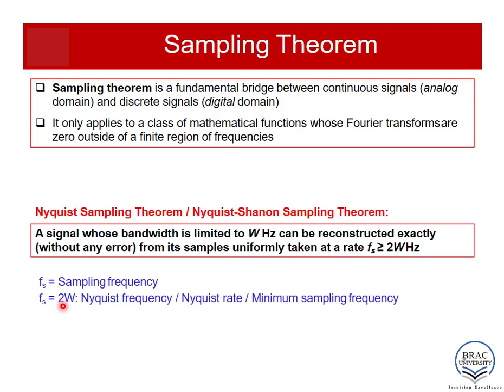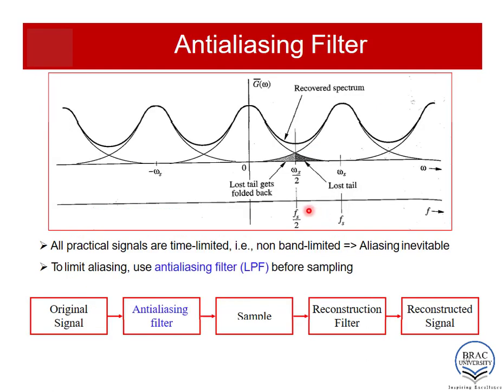So if our sampling frequency is fs and W is our bandwidth, then fs should be at least 2W. This fs of 2W is called the Nyquist frequency, Nyquist rate, or minimum sampling frequency. Now let's talk about the anti-aliasing filter. In our first lecture we already talked about the low-pass filter that is used before the sampler block — that low-pass filter is essentially an anti-aliasing filter.